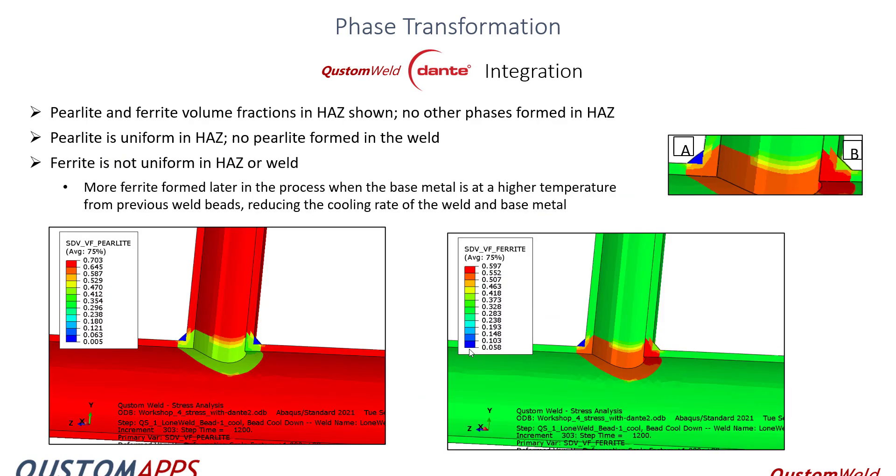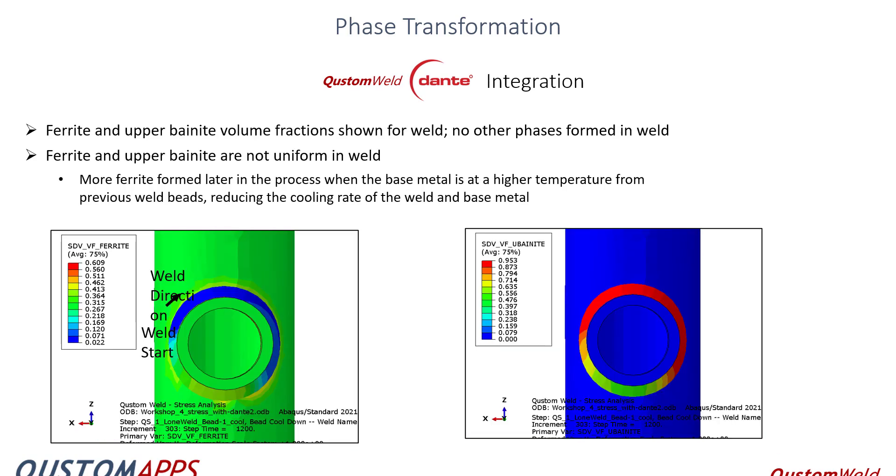All right. So just a couple of small examples. So in this case, just a pipe intersection. So it's interesting that perlite and ferrite volume fractions are shown. Perlite is uniform in the heat affected zone, no perlite in the weld. Ferrite is not uniform. So more ferrite formed later in the process when the base material is at a higher temperature. We have these phases and they're not uniform throughout the weld. They vary quite dramatically just because the base material of the pipe is heating up as the weld process goes around the perimeter. So we see very significant differences in ferrite bainite around the perimeter.